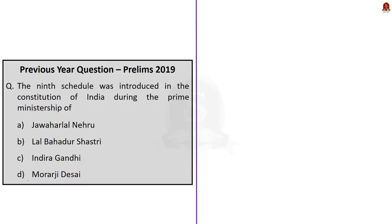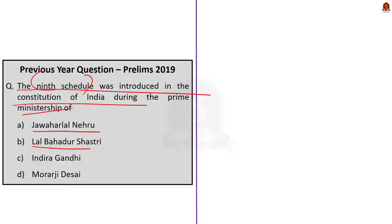Moving on to the second question, this is about the ninth schedule. The ninth schedule was introduced in the constitution of India during the prime ministership of: option A, Jawaharlal Nehru; option B, Lal Bahadur Shastri; option C, Indira Gandhi; option D, Morarji Desai. The correct answer is option A, Jawaharlal Nehru.